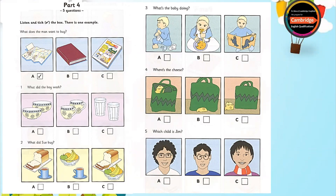5. Which child is Jim? Here come the children. And there's my son, Jim. The boy with the curly hair? No, that's his friend. Jim's got straight hair and glasses. Oh, yes. I can see him. He's talking to the boy with the scarf. That's right.